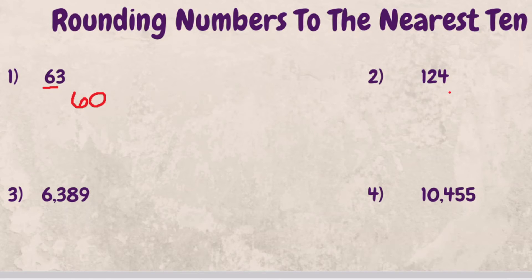Second example, 124. Well, the 2 is in our 10 spot. We look to the right at the 1 spot, which is a 4. 4 or less, you round down, which means 2 stays the same and this becomes 0. 124 rounds to 120.